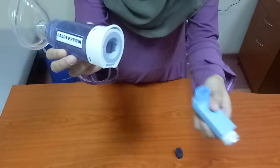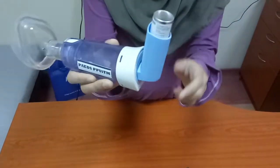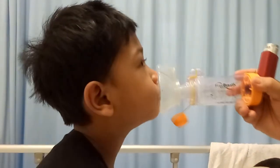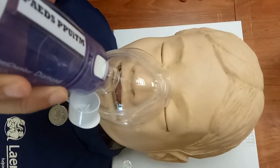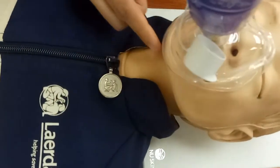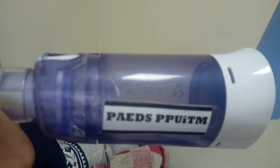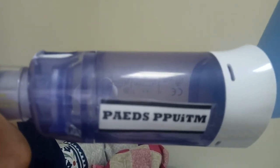Step 5: Apply the mask to the face, ensuring there is an effective face mask seal. The face mask should not cover your eye or go below the chin level, allowing the passage of air. An inspiratory indicator can be used to confirm a good face mask seal.